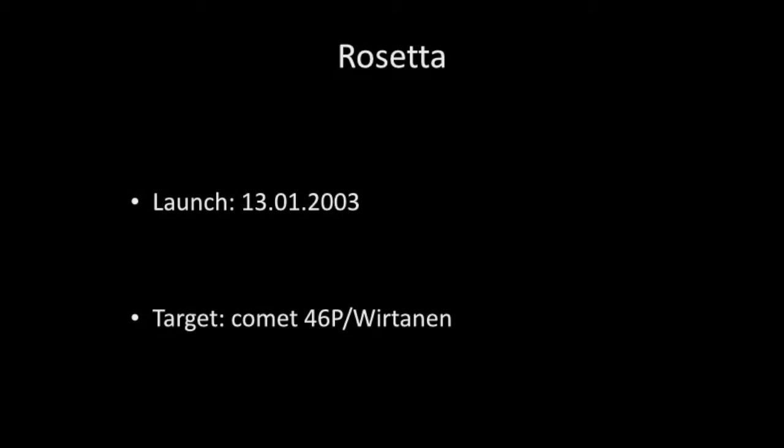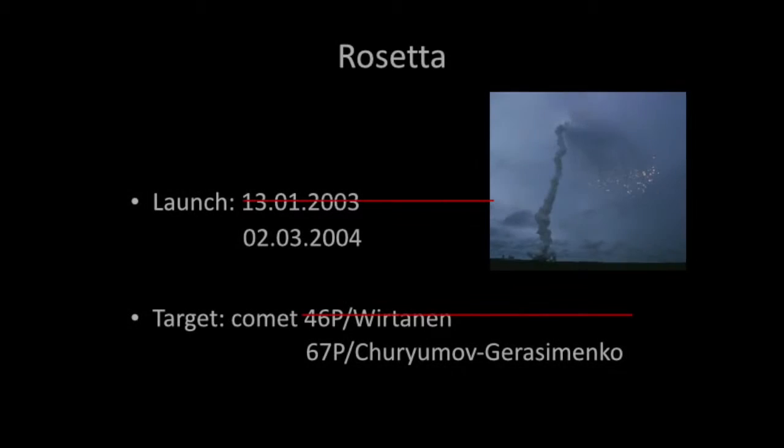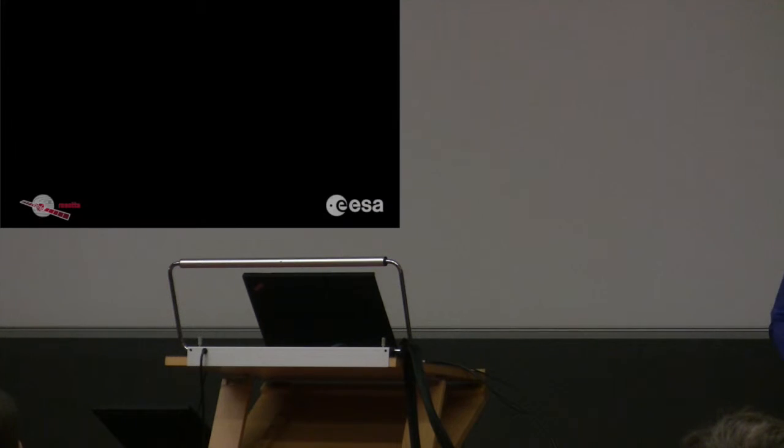The launch was theoretically planned on the 13th of January 2003, and the target was Virtanen. Something not that great happened, end of 2002, the Ariane 5 launch, one of them failed, so everything was postponed. Of course, Virtanen didn't wait, so we had to find another target. The new target was Churyumov-Gerasimenko, and the new launch date was the 2nd of March 2004. Now, I'm going to try to summarize 12 years within 2 minutes, so hold on, it may be pretty intense, especially at the end.